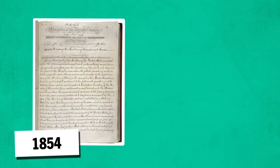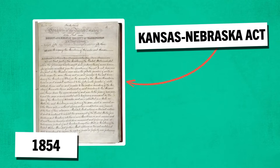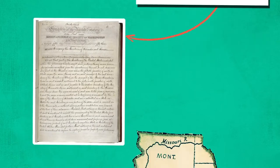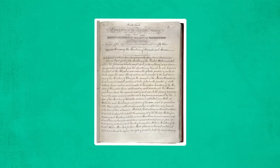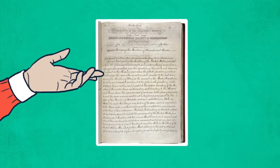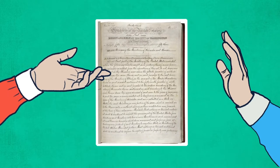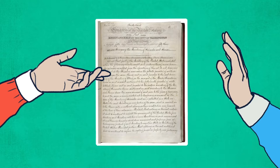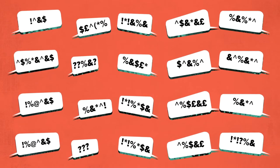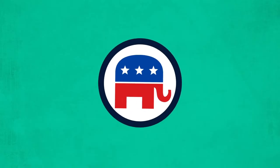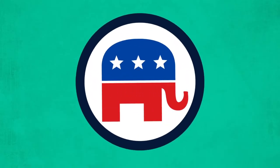Then, in 1854, the Kansas-Nebraska Act declared that each new state should be able to choose whether they would be free or slave states. This caused a huge uproar. Many in the South feared that slavery would be ended, and many in the North were concerned that slavery would spread across the country. Political turmoil followed, and when the dust settled, it led to the creation of a new group who supported free states — the Republican Party.